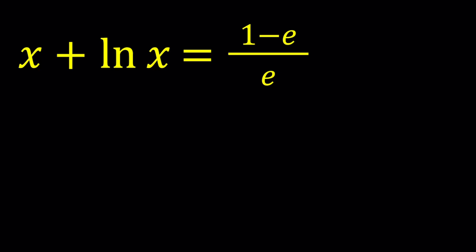Anyways, we have x plus ln x equals (1 minus e) over e. And we're going to be solving for x values. So we're going to talk about a couple different things here. And I'm going to show you a graph at the end which kind of explains what is going on.